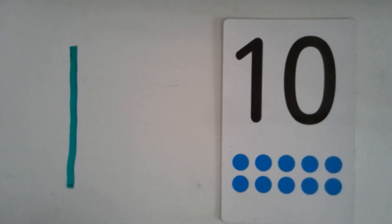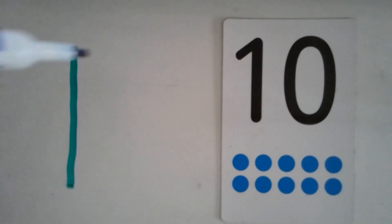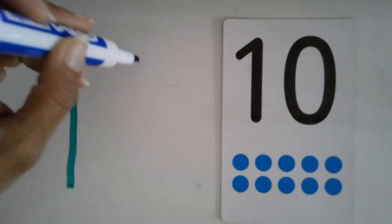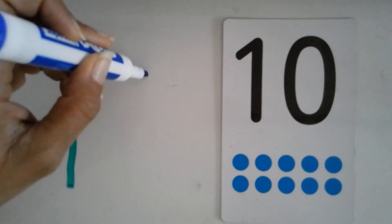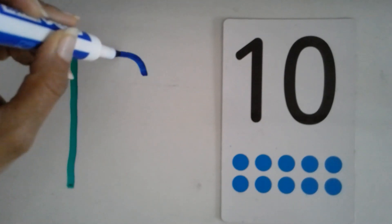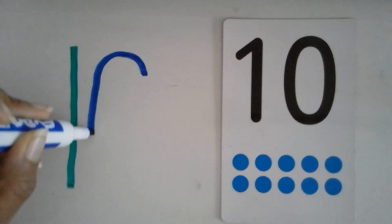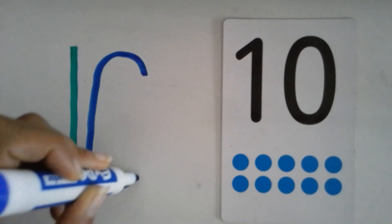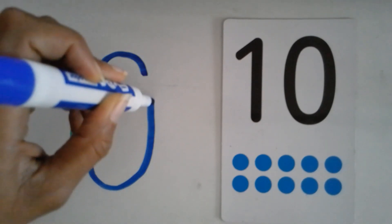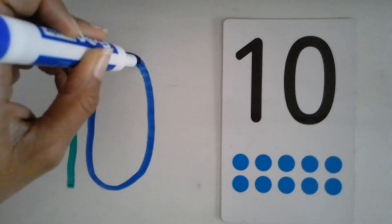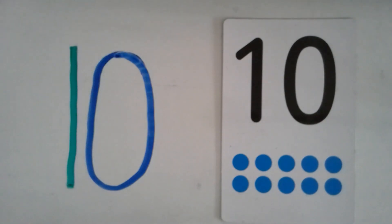When you write a zero, try writing a circle or an oval. They look like zeros. Put your pencil at the top of the page and go around. Go slowly. Make sure you connect the lines. And stop.